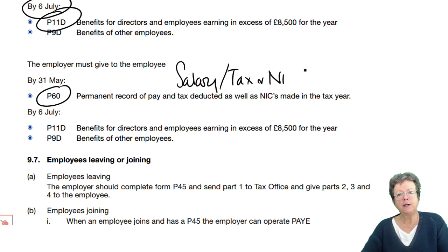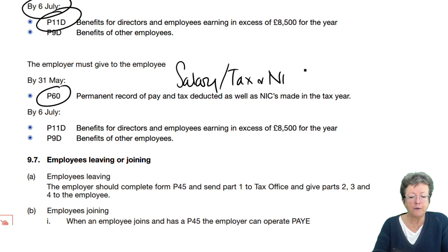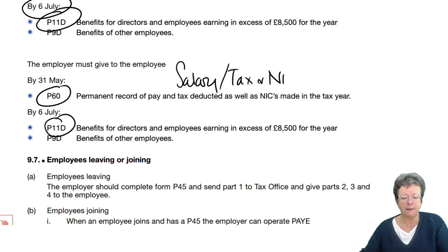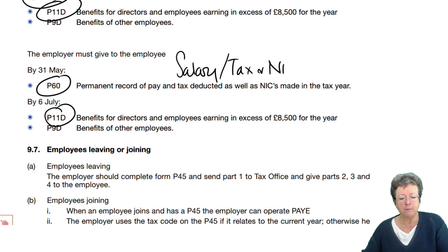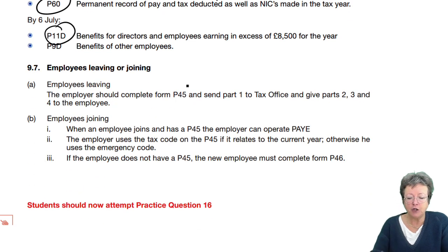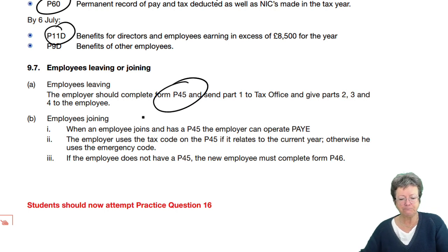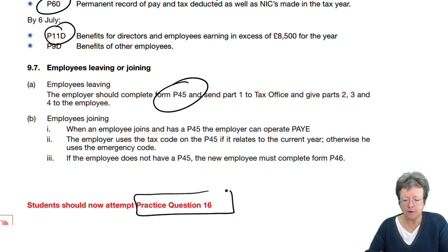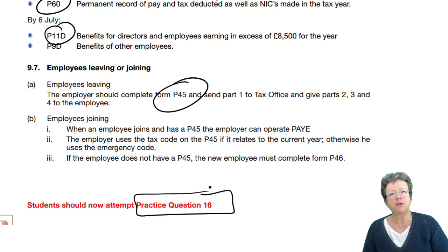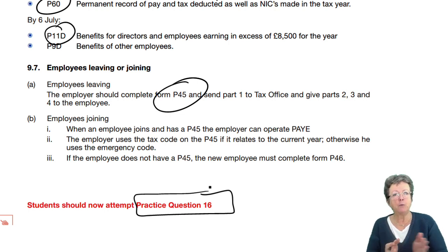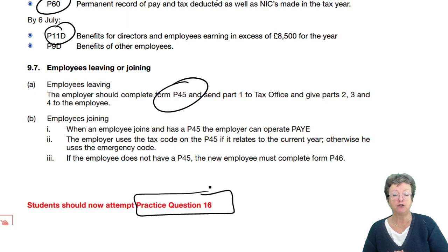If you get a P60 at the end of the year, check it's right — it might not necessarily be right. They must also supply the form P11D to the employee themselves by the 6th of July, and when they leave the job, a P45. That's the end of the chapter. If you could do practice question 16 — and if you're unsure of any of the sections we've dealt with, pause and go back, watch it again. Go through the examples, particularly the ones with the cars and the Formula 1 drivers, before you do practice question 16.